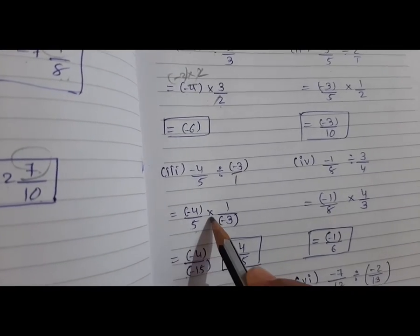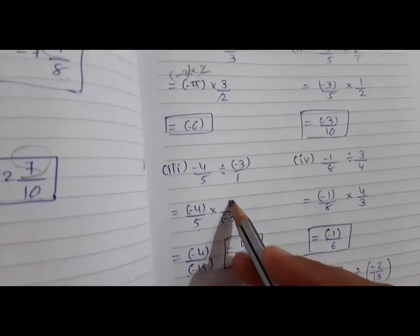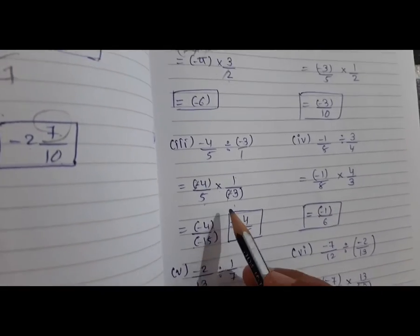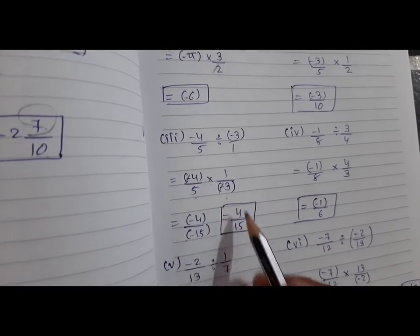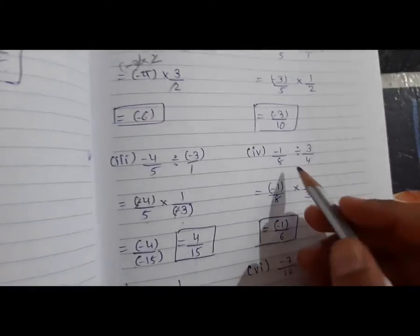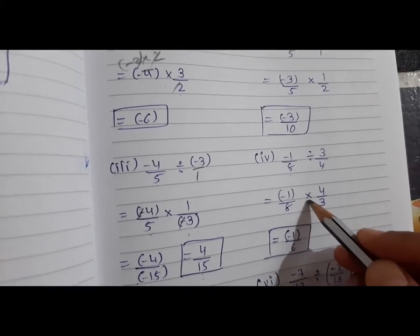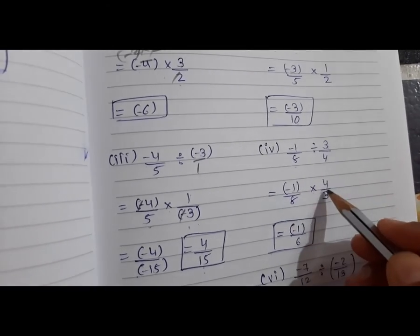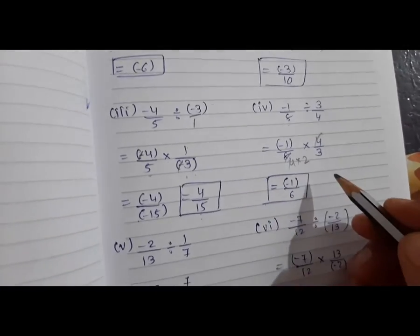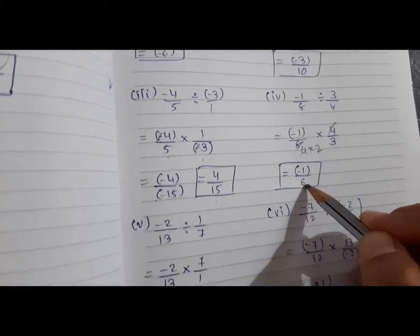After that, minus 4 upon 5 divide by minus 3 upon 1. So minus 4 upon 5 multiply the reciprocal, which is 1 upon minus 3. The minus minus cancels, giving plus. So 4 upon 5 times 3 is 15 — answer is 4 upon 15. Then minus 1 upon 8 divide by 3 upon 4. Minus 1 upon 8 multiply 4 upon 3 — 4 and 8 cancel (4 times 2 is 8), giving minus 1 upon 2 times 3 is 6 — answer is minus 1 upon 6.